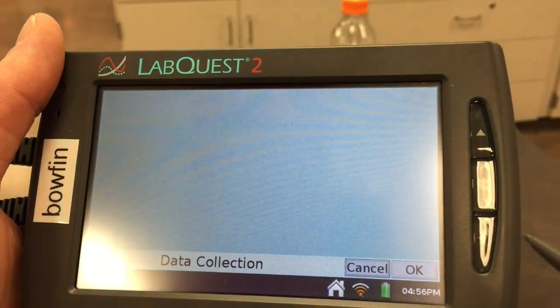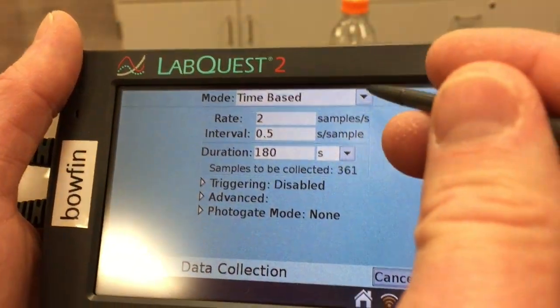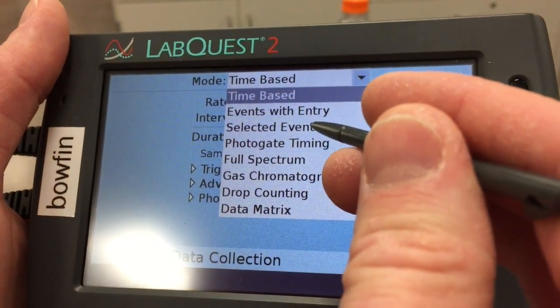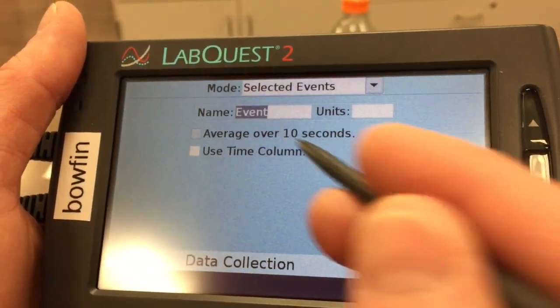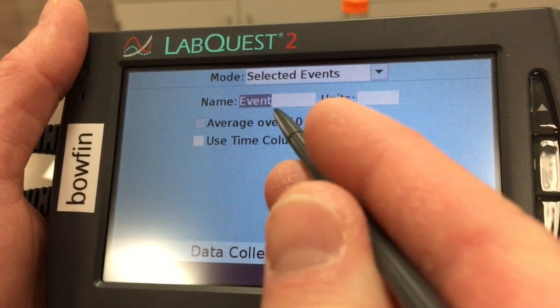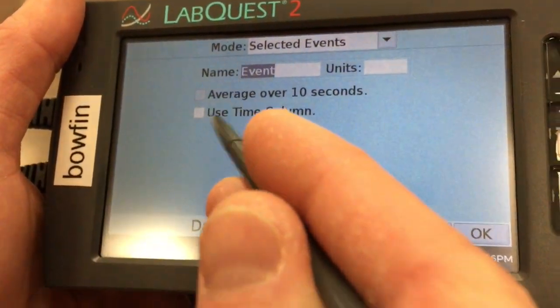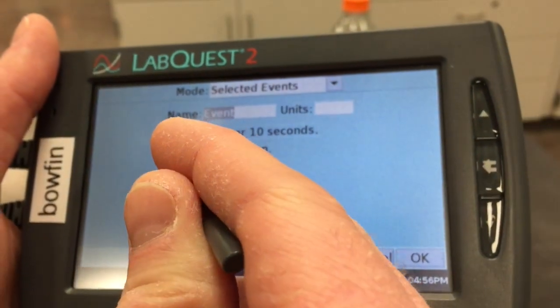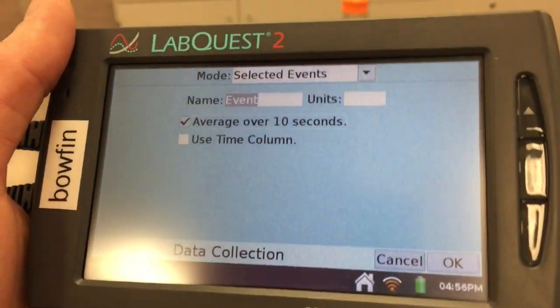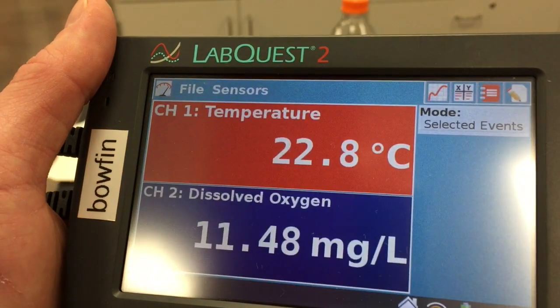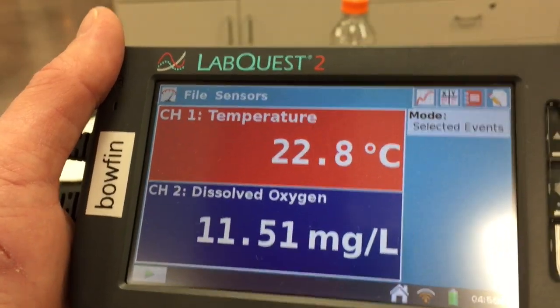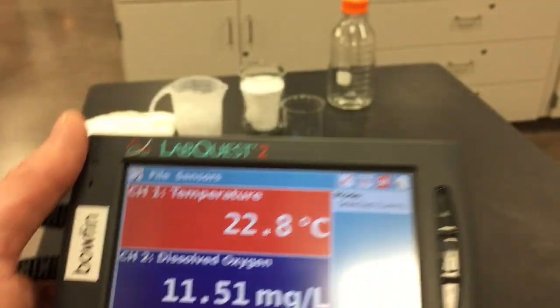Select the mode and change it from time-based to selected events. You can leave the name as event and don't have to fill anything in for units. But you do want to click average over 10 seconds and then select OK. Very good. Our LabQuest is set up and ready to collect data.